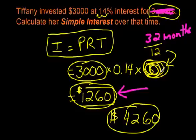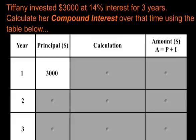Now, we're going to move on, and I'm going to show you how simple interest can lead us into understanding what the heck compound interest is. Well, here's the situation. It's still Tiffany. She invested $3,000 at 14% interest for 3 years. Calculate her compound interest over that time using the table below. So it was 3 years. As you can see, our table has 3 years here. The principal's $3,000. That's how much we started with.